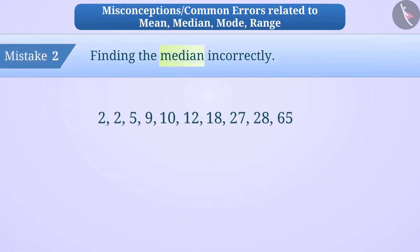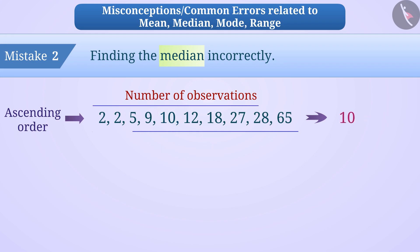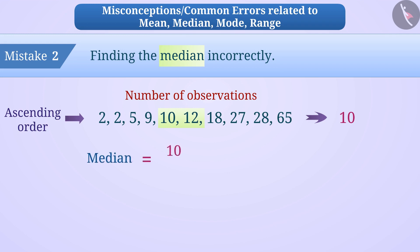Mistake 2: for a group of 10 observations in ascending order, some children divide the number of observations by 2 to find the median's position — getting 10 divided by 2 equals 5 — and think the fifth number, which is 10, is the median. This is a misunderstanding. When the number of observations is even, we find the mean of the two middle numbers. The two middle numbers are 10 and 12, so the median is 10 plus 12 divided by 2, which equals 11.